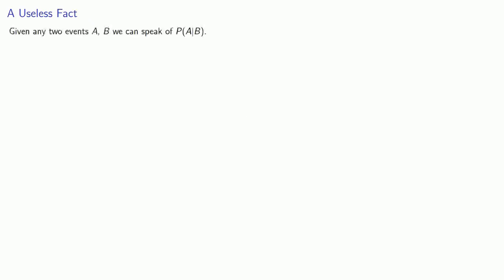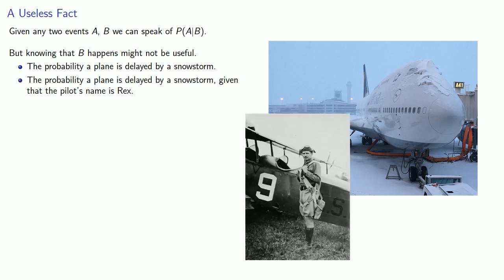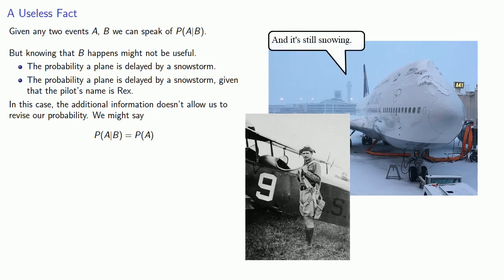Given any two events A and B, we can speak of the probability of A given B. But knowing that B happens might not be useful. If we want to talk about the probability a plane is delayed by a snowstorm, we have some estimate of the likelihood that this will happen. But suppose we have some additional information — in this case, that the pilot's name is Rex. Given this information, how should we revise our probability? In this case, even though we got some additional information, it doesn't allow us to revise our probability. So we might say the probability of A given B is the same as the probability of A itself.